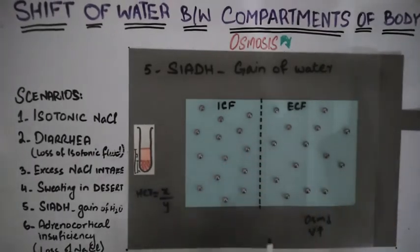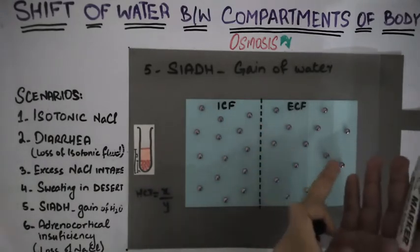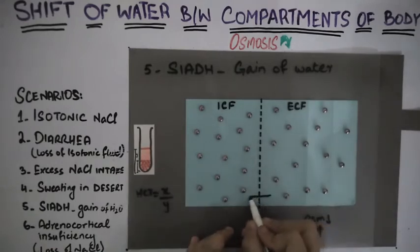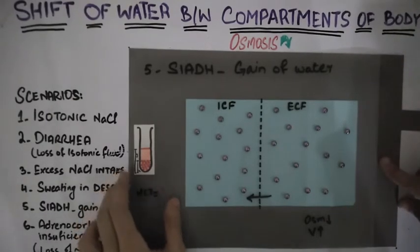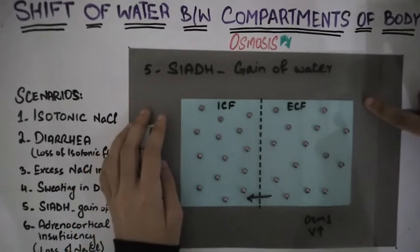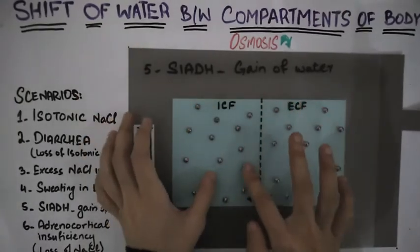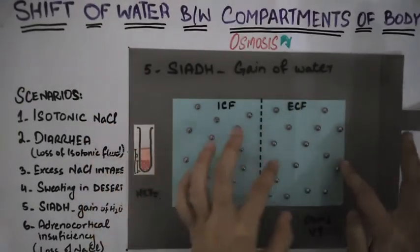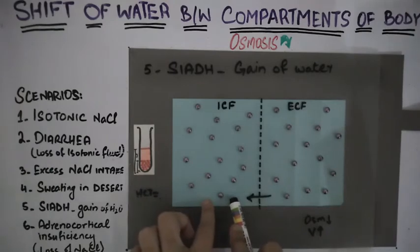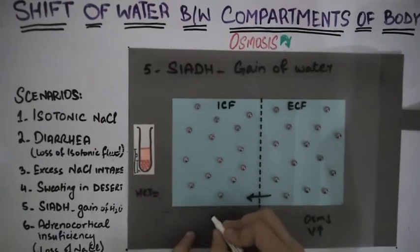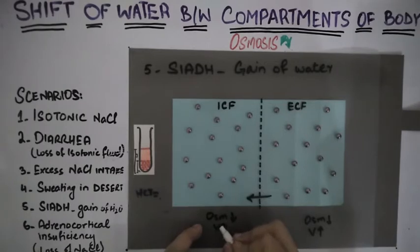The decrease in osmolarity of extracellular fluid compared to intracellular fluid will lead to a shift of water from the extracellular fluid into the intracellular fluid, until the osmolarity of the two solutions becomes equal. As a result, the intracellular fluid becomes diluted — its osmolarity decreases and its volume increases, just like the extracellular fluid.